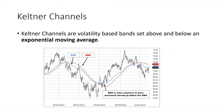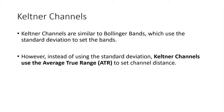Keltner Channels are volatility-based bands set above and below the exponential moving average. I like exponential moving average better than a simple moving average because it's more sensitive to recent price changes. Keltner Channels are similar to Bollinger Bands — Bollinger Bands use standard deviation while Keltner Channels use average true range to set the distance.